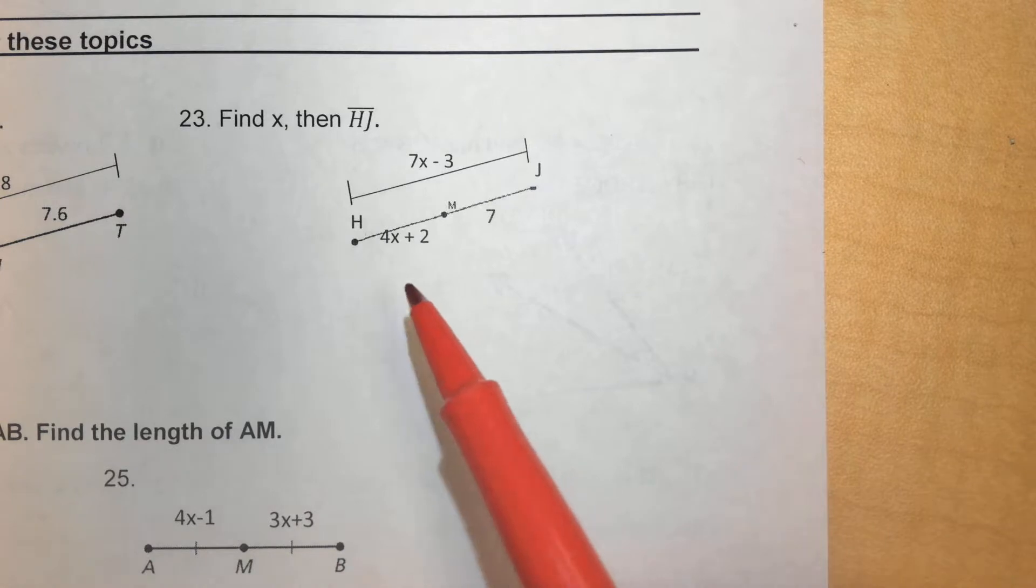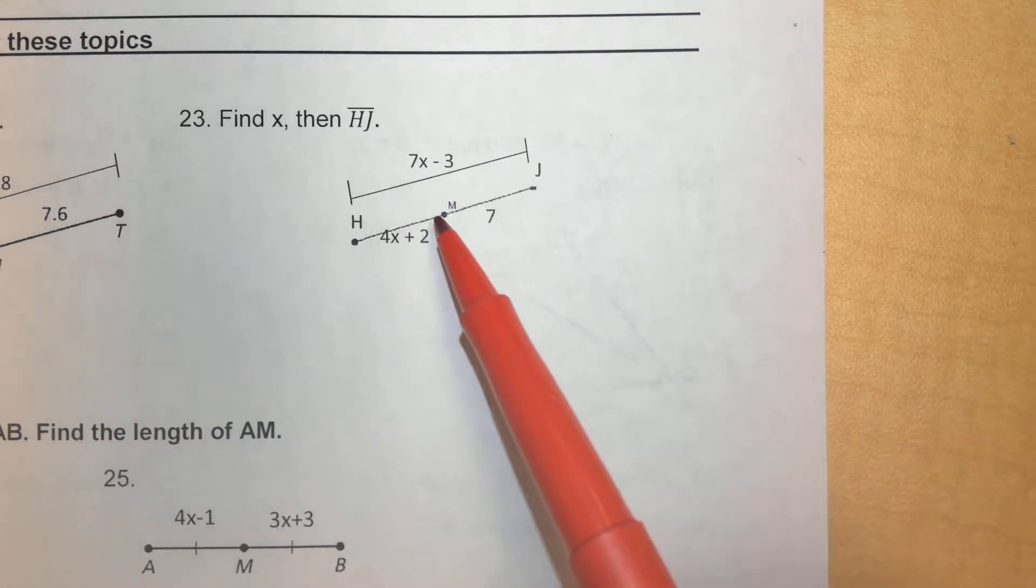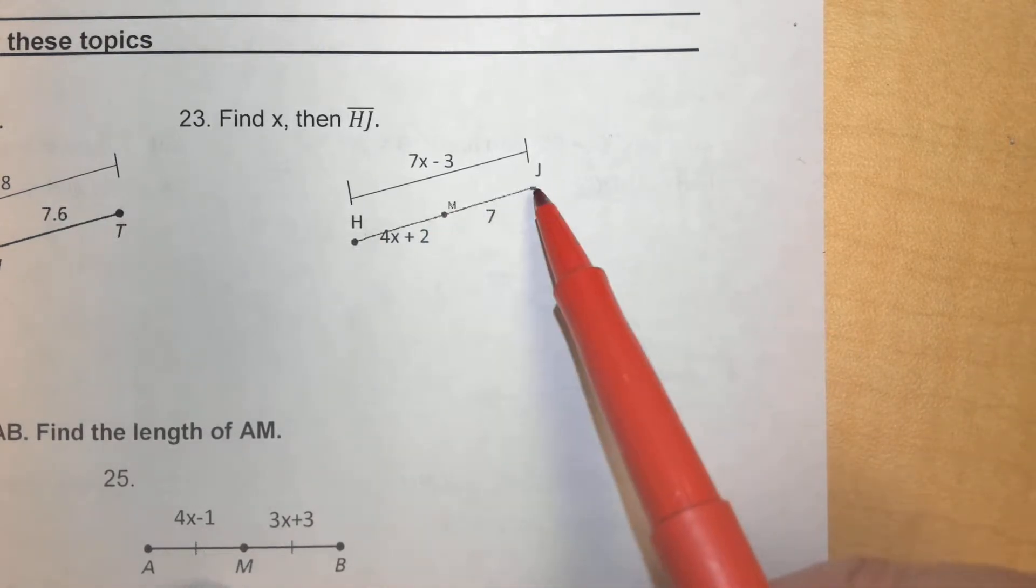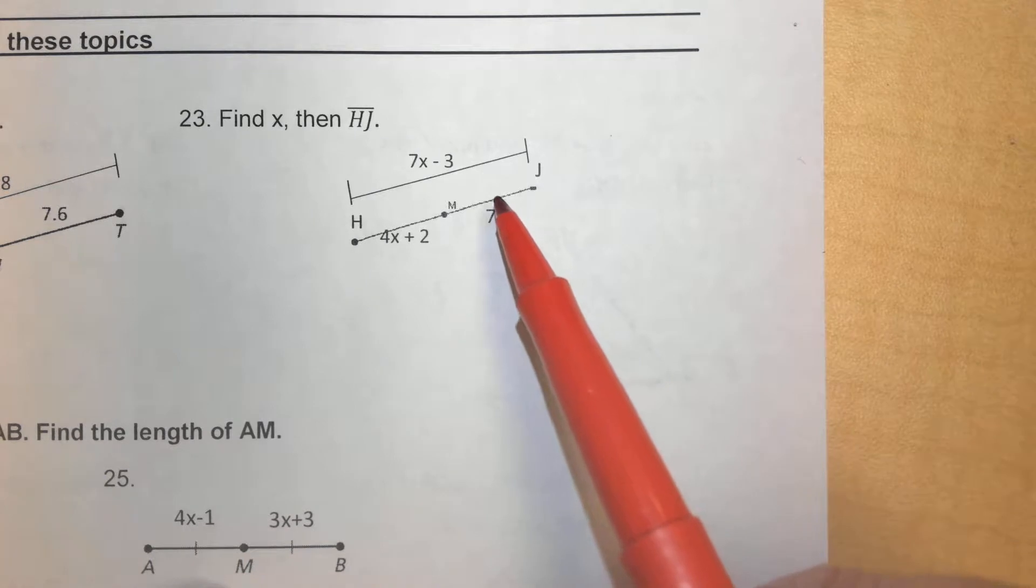Basically, what we know about this problem is that if we take the distance from H to M, let's forget this X stuff for a second. If we take this distance from H to M and the distance from M to J, and we add those together, we would have the distance from H to J.